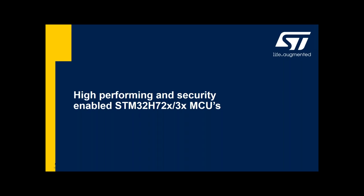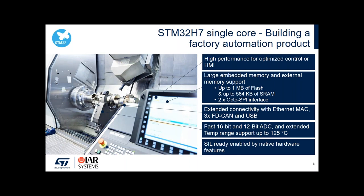I'll now jump to the product presentation itself. The first application example is a factory automation product — an HMI application that also performs process control. This device comes with up to 1 megabyte of embedded flash and up to 564 KB of RAM, with the capability to address external memory via the OctalSPI interface.